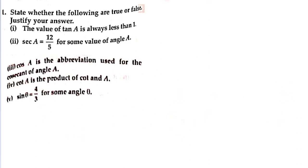Now the last question here: state whether the following are true or false and justify your answer. First: the value of tan A is always less than 1. This is not true. If you learn the table of tan values, tan can be greater than 1 as well — it is not always less than 1.